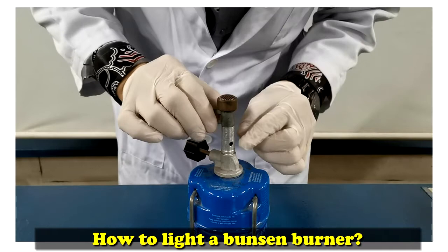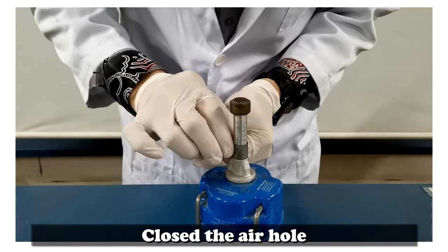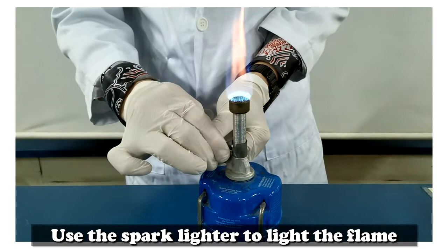How to light a Bunsen burner? Close the air hole. Use the spark lighter to light the flame. Adjust till you see a blue flame.